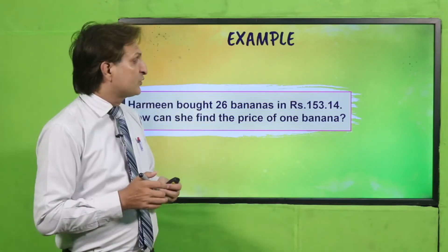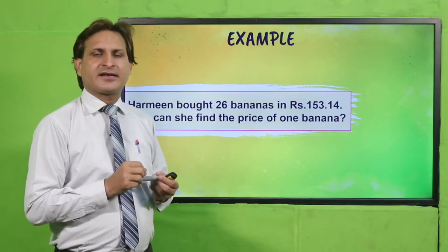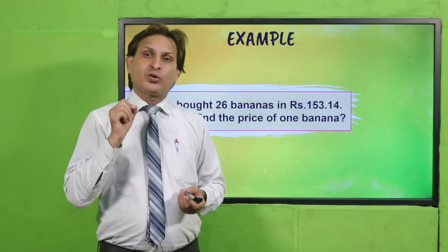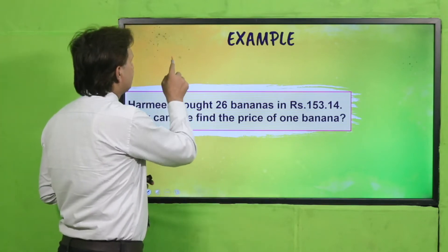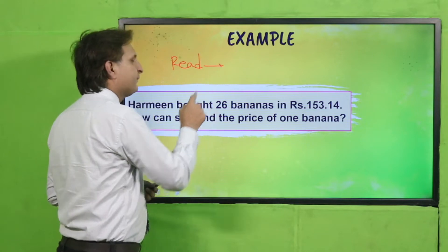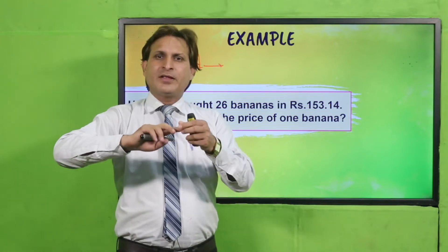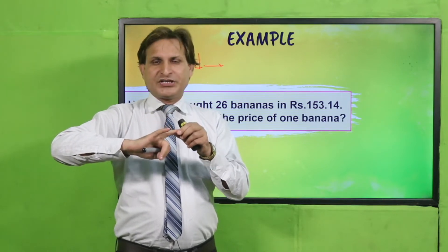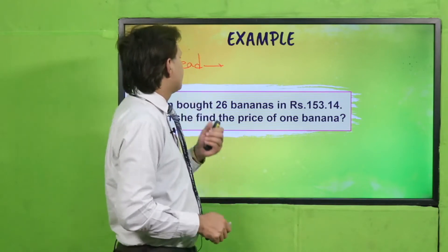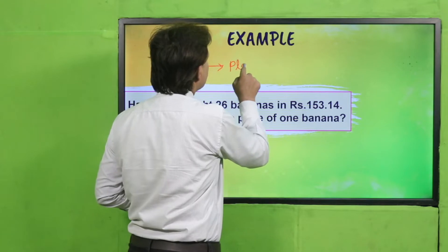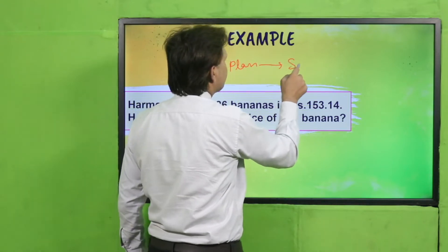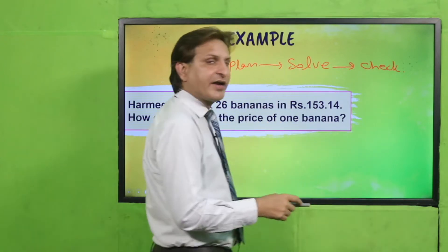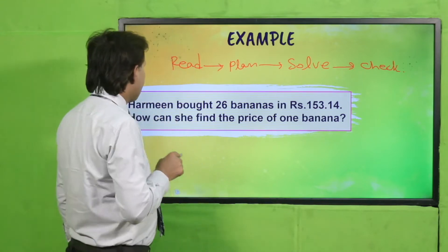Ab aajaayen example ki taraf. Example ko aapne gaur se read karna hai aur phir solve karne ki koshish karni hai. Ek cheez yaad rakhein: jab bhi aapne koi word problem solve karni ho, to in four steps ko yaad rakhein. First step: Read the problem. Second: Plan to solve. Third: Make a solution. Fourth: Check your solution.